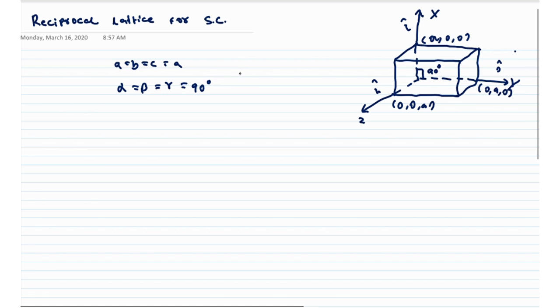This is the lattice parameter for simple cubic. With this basis we can write that the translation vector a - also from this figure can be shown that a vector equals a i-cap, and all the other components are zero being 90 degrees. Similarly, b vector can be written as a j-cap, and c vector can be written as a k-cap.